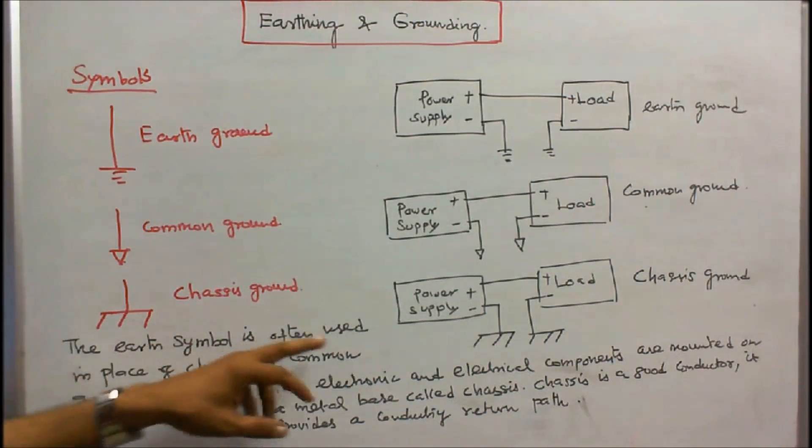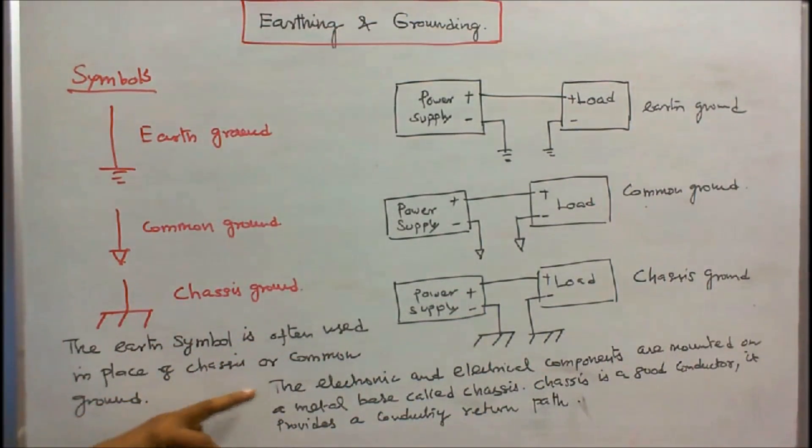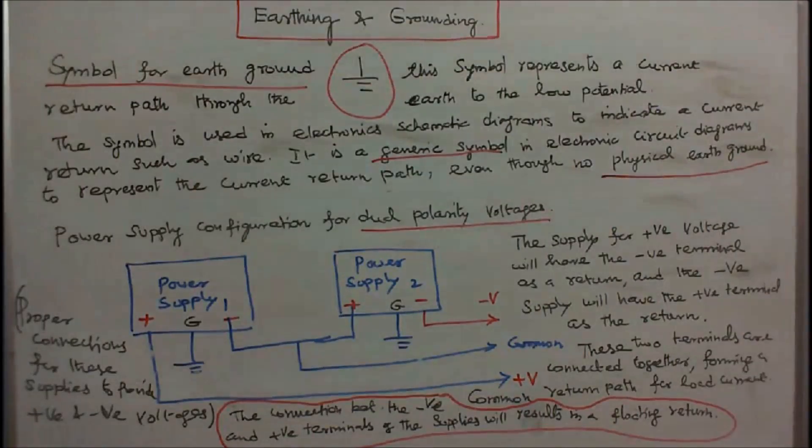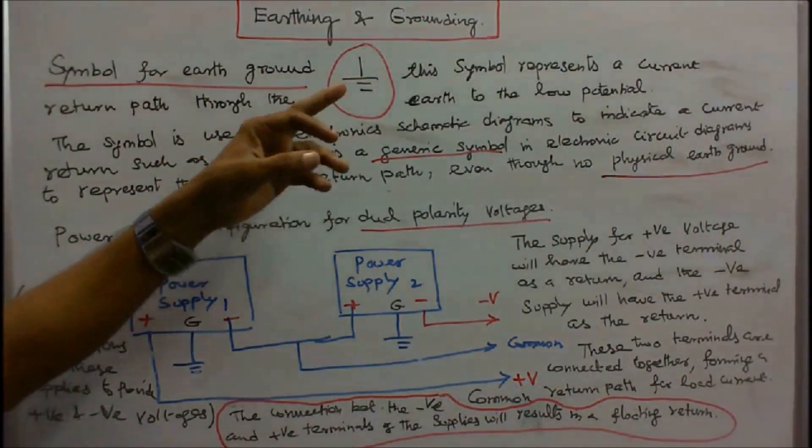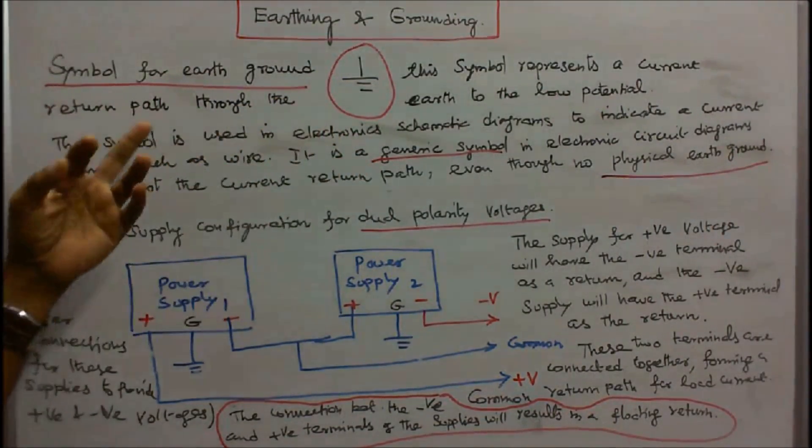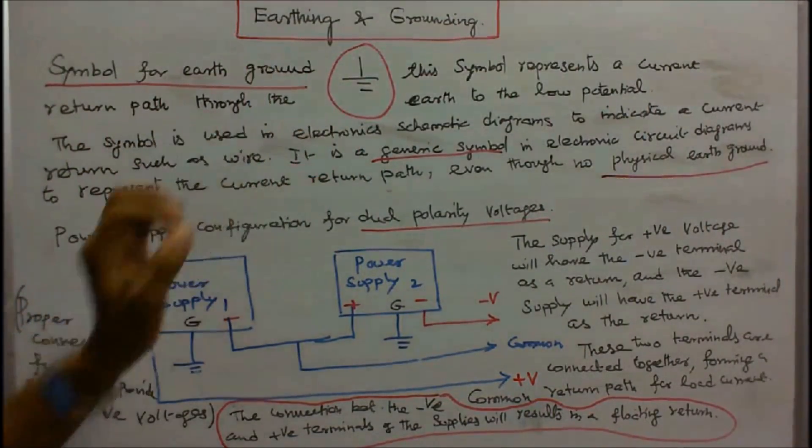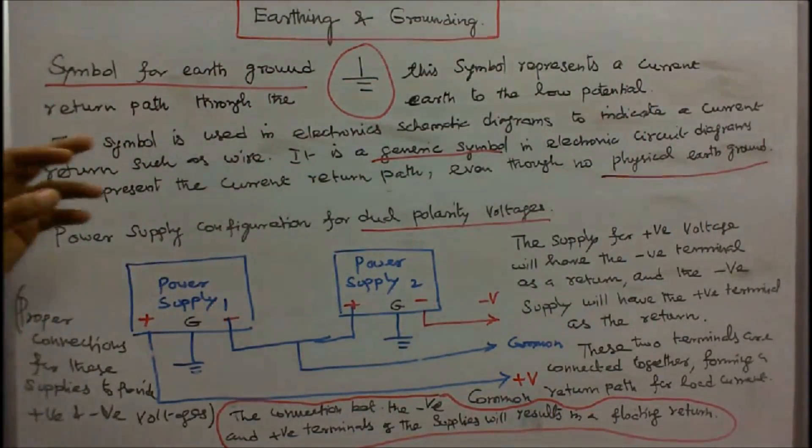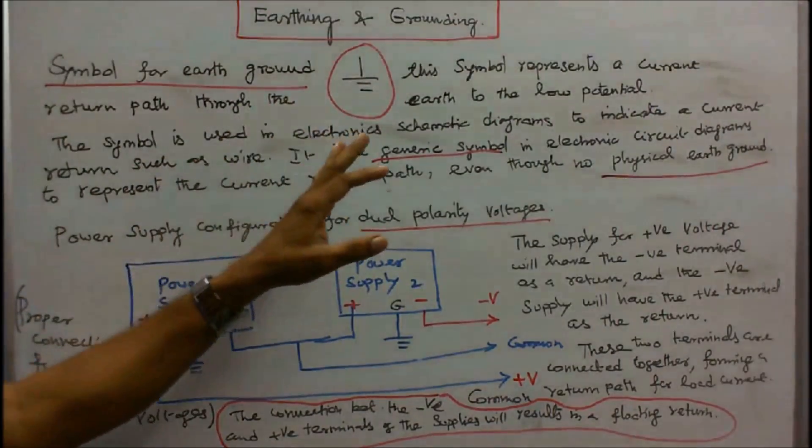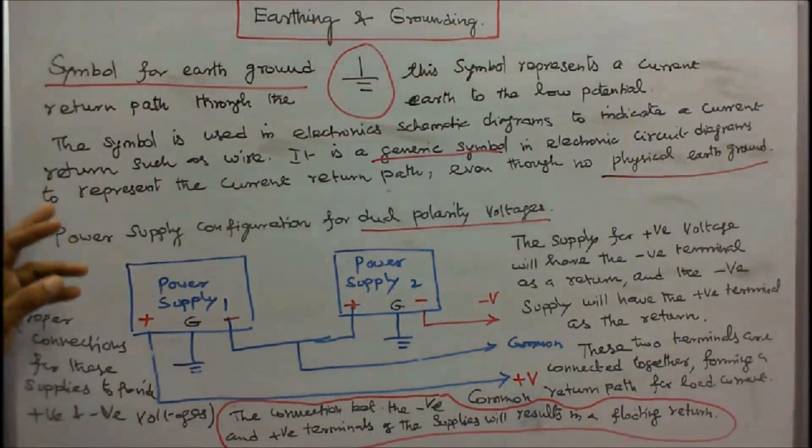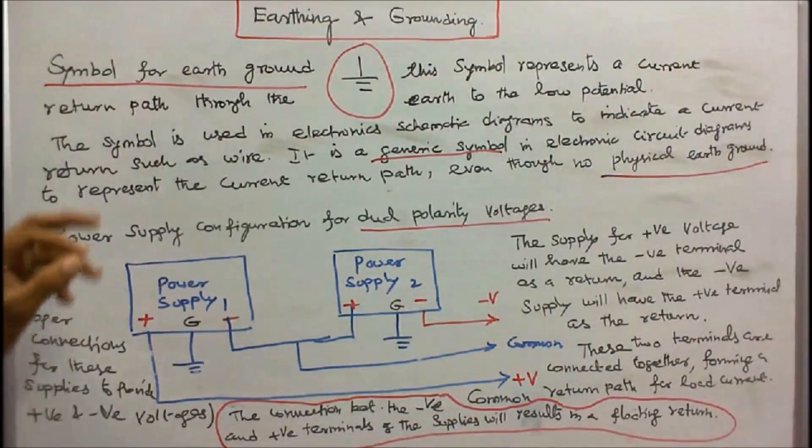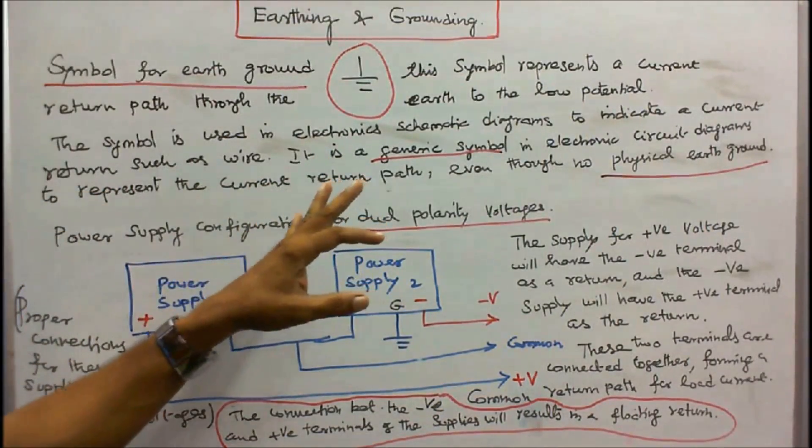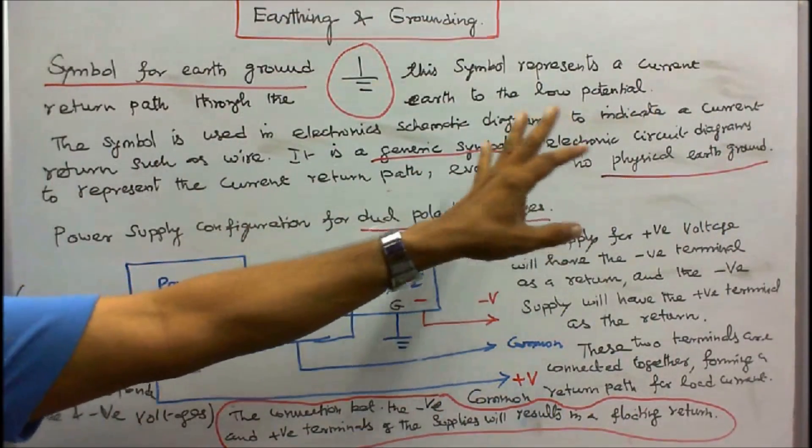The earth symbol is often used in place of chassis or common ground. This symbol represents a current return path through the earth to the low potential. The symbol is used in electronic schematic diagrams to indicate a current return such as wire. It is a symbol in electronic circuit diagrams to represent the current return path even though no physical earth ground.